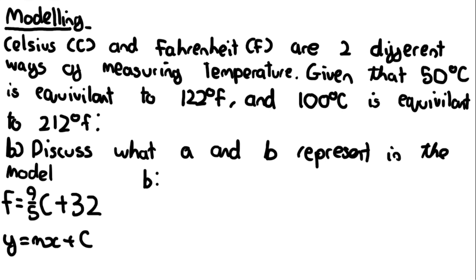Let's start with b. b is 32 and b is the y-intercept. What does the y-intercept actually mean in real life? It means at 0 degrees Celsius, because remember the y-intercept is when x equals 0 and we're saying Celsius is x in this example, 0 degrees Celsius is equivalent to 32 degrees Fahrenheit. That's what b means in real life.